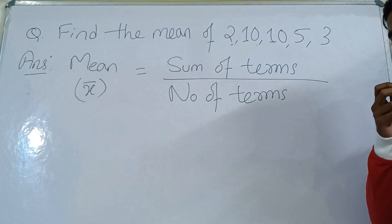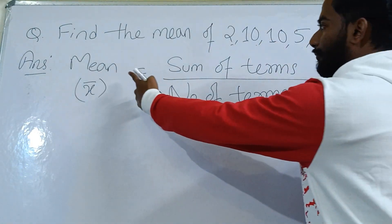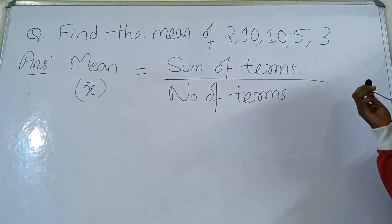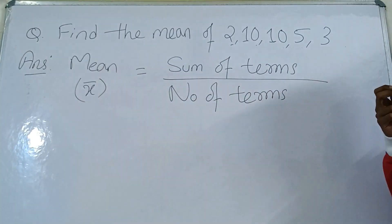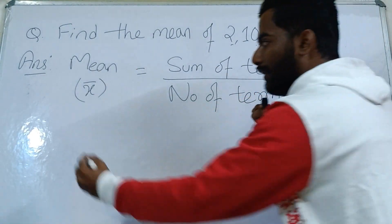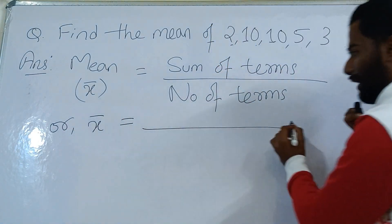Mean ka matlab kya hota hai? Mean ka matlab hota hai sum of terms - jo bhi terms diye huye hai sab ko add karo aur fir jo sum aaya usko divide karo kitne saare terms the unse. Mean ka jo symbol hota hai wo hota hai x bar. So ab hum likhenge x̄ equals to.